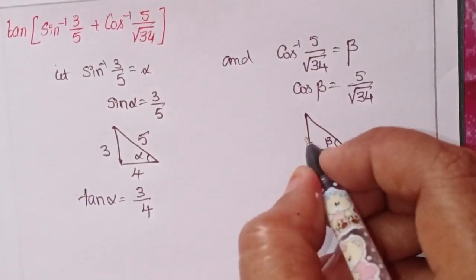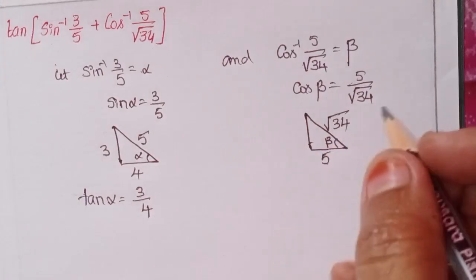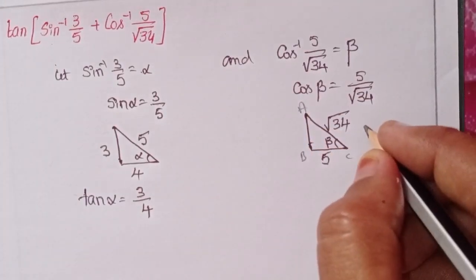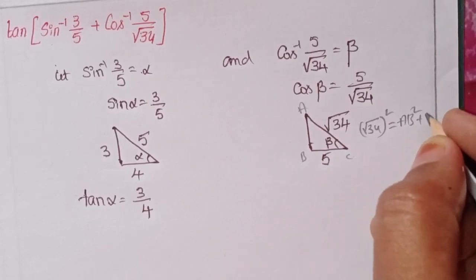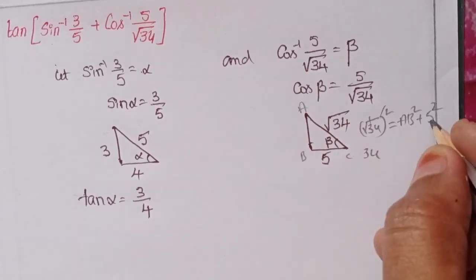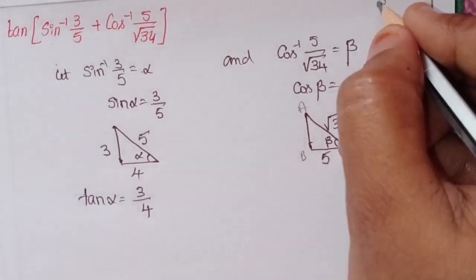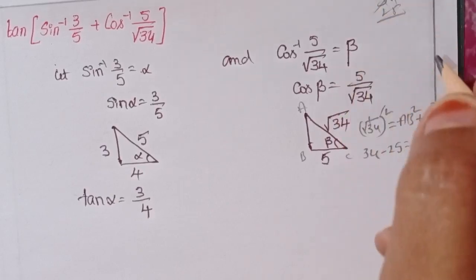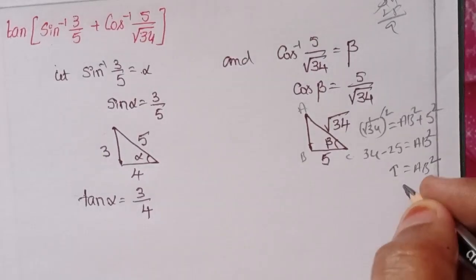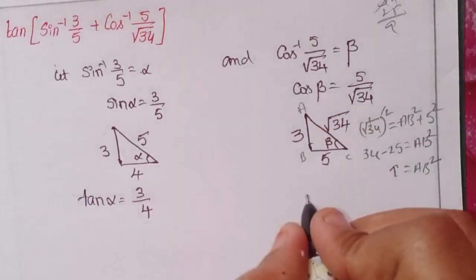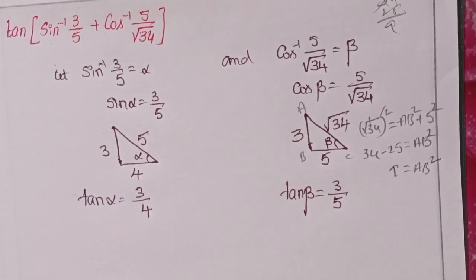For beta, cosine is adjacent side by hypotenuse. Using Pythagoras: AC squared equals root 34 whole square, so AB squared plus 5 squared equals 34. AB squared equals 34 minus 25 equals 9, so AB equals 3. Therefore tan beta equals opposite by adjacent equals 3 by 5.